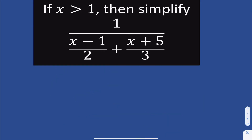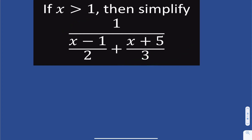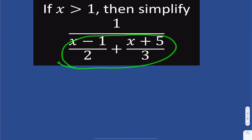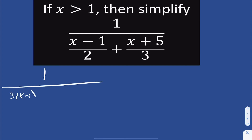Let's look at this next problem. We have x is greater than 1, and they want us to simplify this expression. Before simplifying the whole thing, we need to recognize that we do not have a common denominator between the two values — the common denominator between 2 and 3 is 6. So I'm going to multiply the top by 3 and the bottom by 3 to get 6.